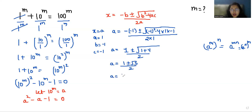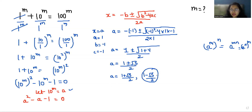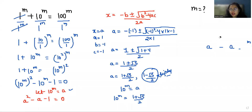We have two values: a = (1 + √5)/2 and a = (1 − √5)/2. Since a = 10^m, a must be positive. The value (1 − √5)/2 gives a negative result, so we reject it and keep a = (1 + √5)/2.